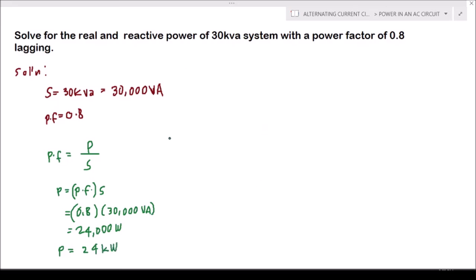Okay, then we will solve now for our reactive power. We know that the apparent power is equal to the square root of the real power squared plus the square of the reactive power. If you are going to square both sides and solve for Q, we could say that Q is equal to the square root of the apparent power squared minus the real power squared.